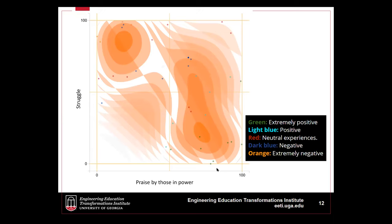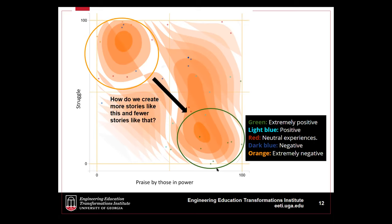SenseMaker also allows for more advanced visualizations like a heat map, which can point to opportunities for positive change. This heat map combines participant responses to two questions — the dyad and the triad shown earlier. In the top left-hand corner we see a concentration of stories rated as high struggle and low praise by those in power, while another concentration in the bottom right shows low struggle and high praise. The question becomes: what can we do in real time to create more stories like those in the bottom right, and fewer like those at the top? To answer this, we study the actual experiences participants recounted.